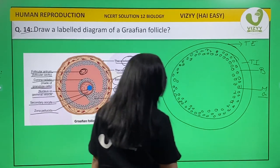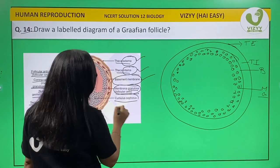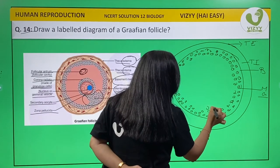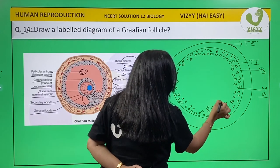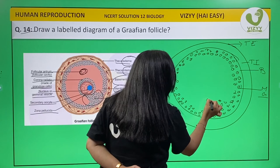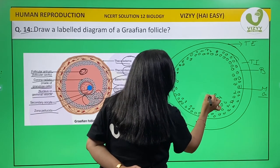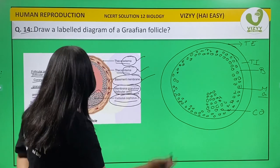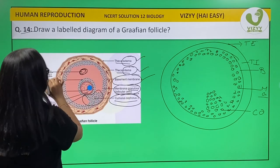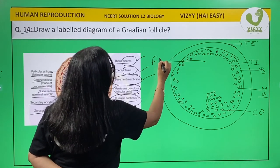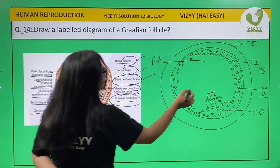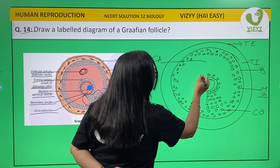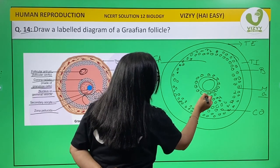Now this structure is the cumulus oophorus — let's draw that. We are done with the cumulus oophorus. Now we have the follicular antrum, and on the side of it is the corona radiata.